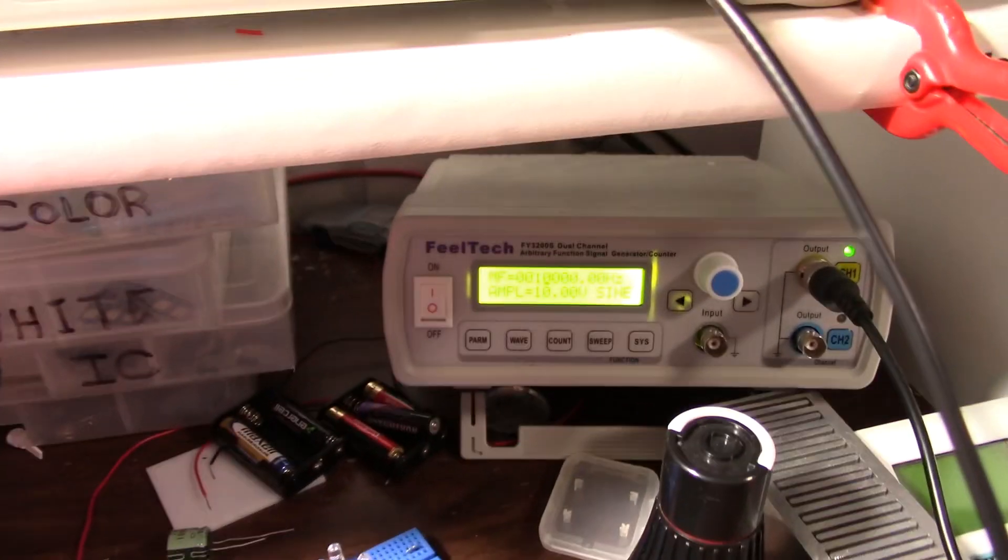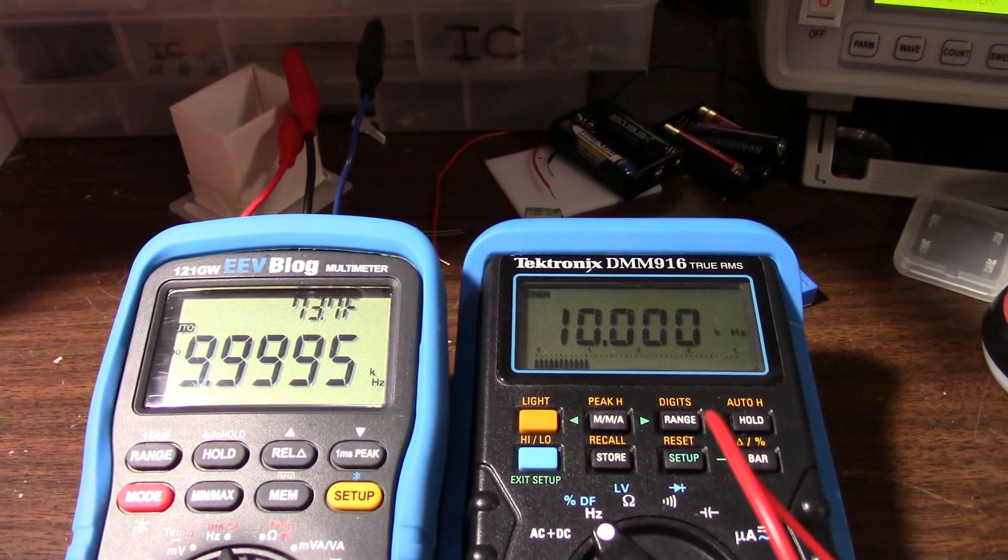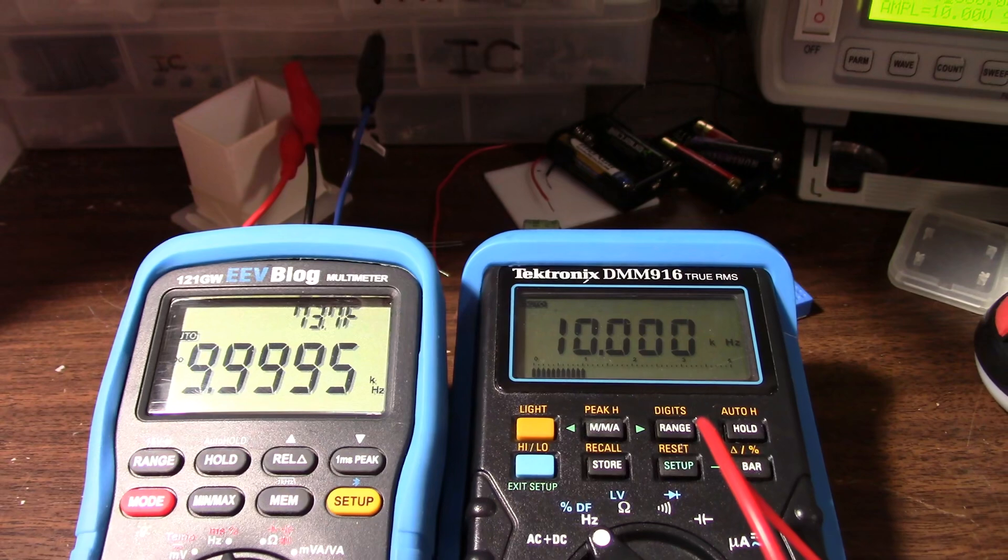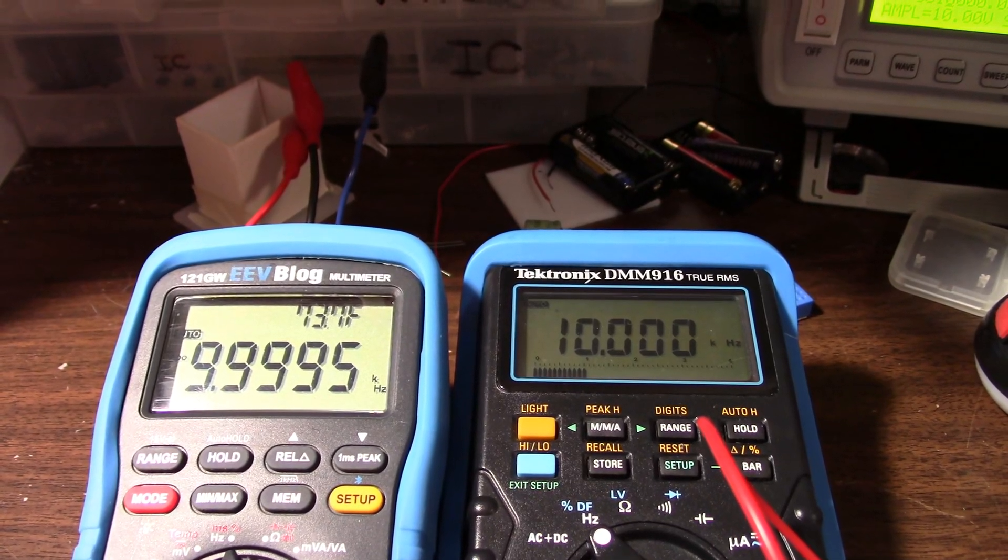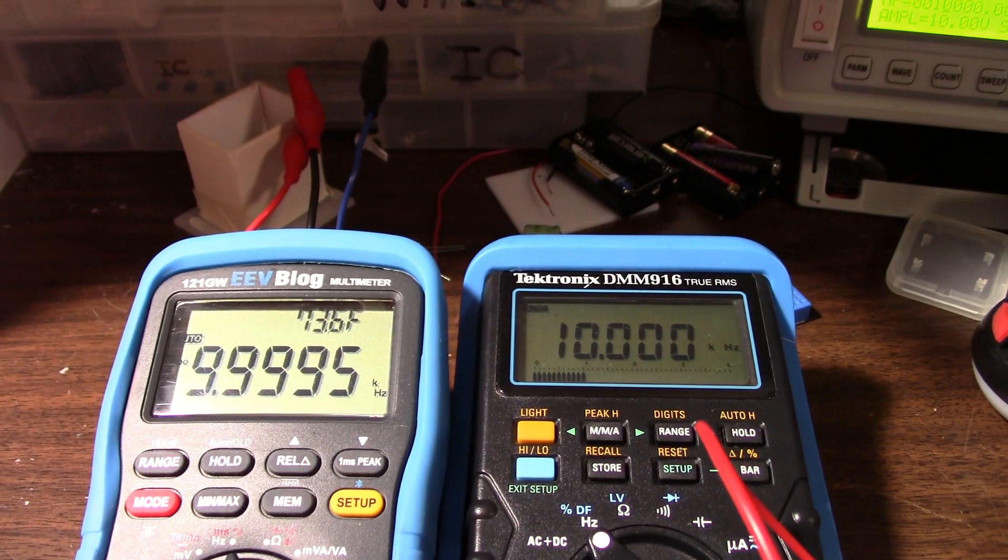So now I'm measuring the frequency using the field tech. And they're going to be pretty close. Frequencies are easy for multimeters to get right. I'll check a few other frequencies. But I'm sure they're going to be pretty accurate.